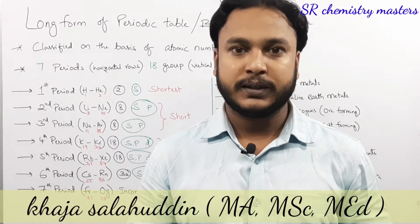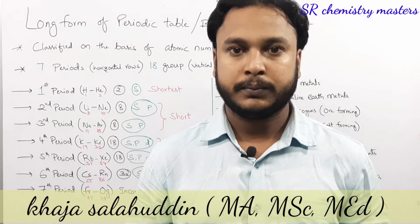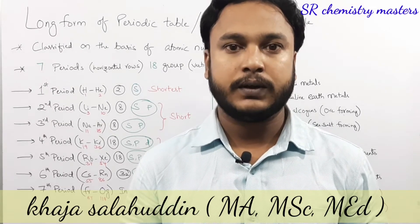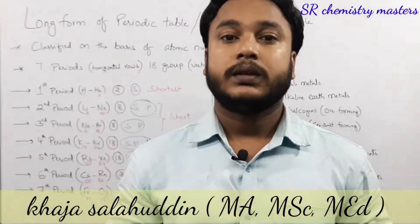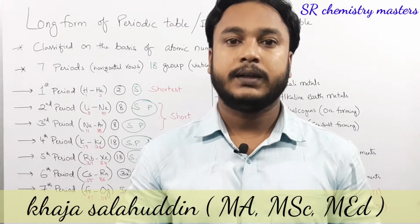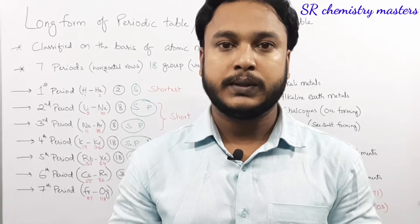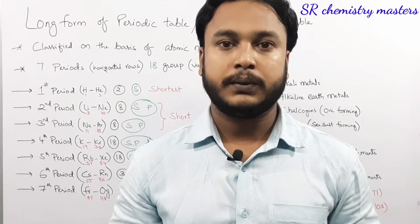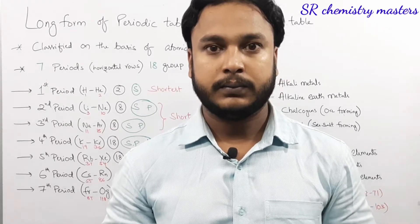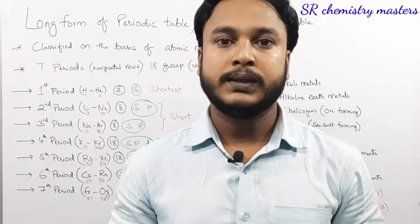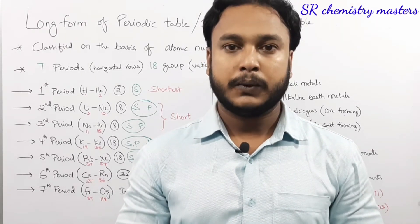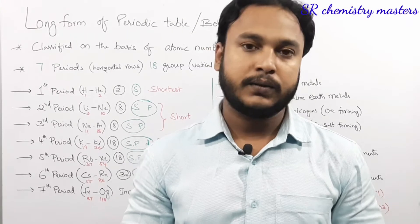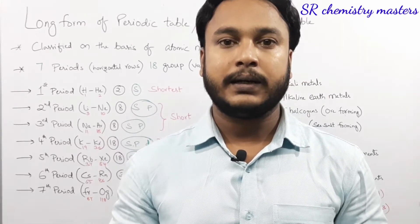In this video we are going to discuss the long form of periodic table. As you all know, nowadays we are using the periodic table which consists of 118 elements. In the last video we have seen the different types of classification from Dobereiner to Moseley. Now we are going to see the long form of periodic table, also known as Bohr's periodic table. The basis for Bohr's periodic table is similar to that of Moseley's modern periodic table, in which the basis for classification of elements is their atomic number.